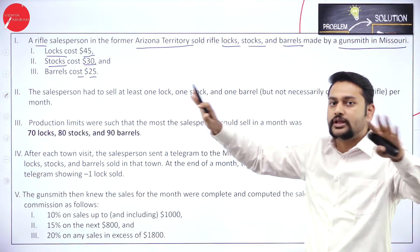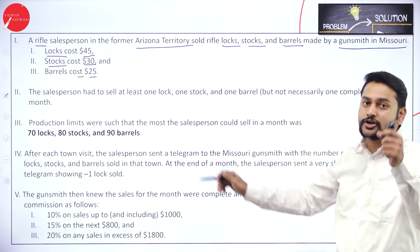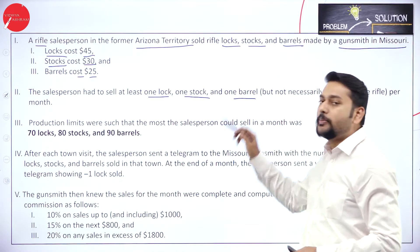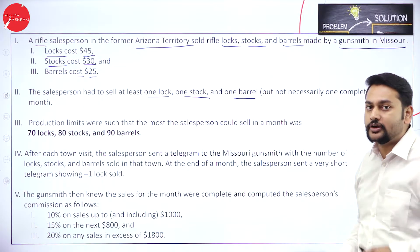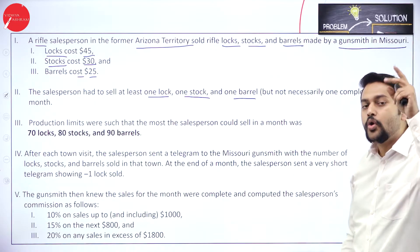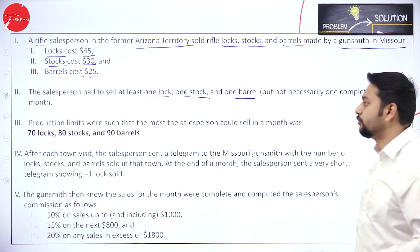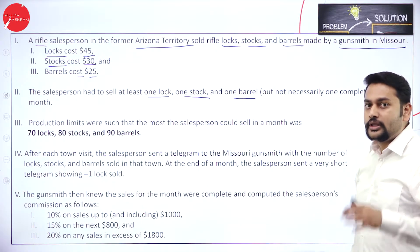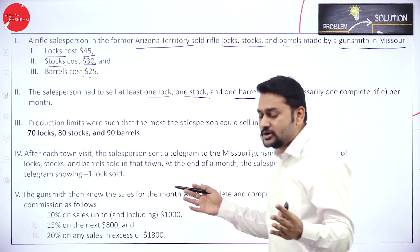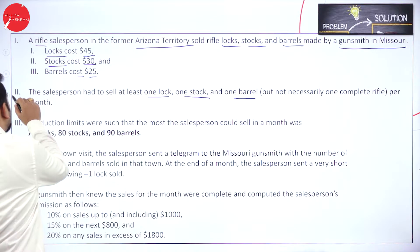The second point is very important: the salesperson had to sell at least one lock, one stock, and one barrel. He can sell one lock, one stock, one barrel, but not the complete rifle. That's a very important piece of information to keep in mind.